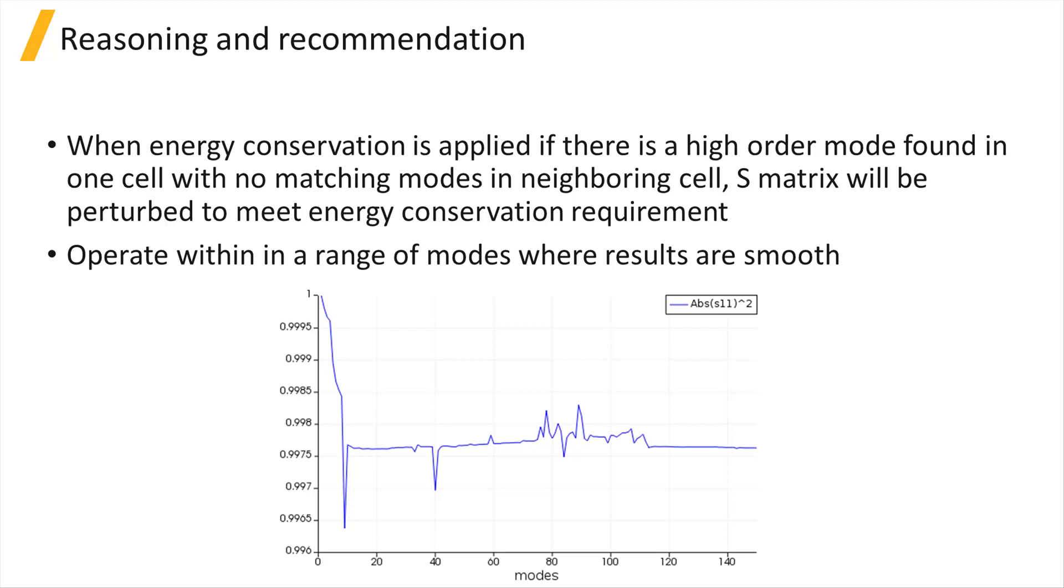The perturbations in the S-matrix cause sharp peaks or dips that can be seen in the S-parameter plot from the mode convergence sweep, like we see here. As you further increase the number of modes, a matching mode may be found in the neighboring cell and the plot becomes smooth again.